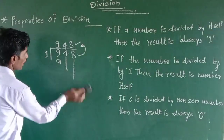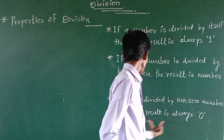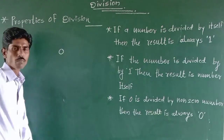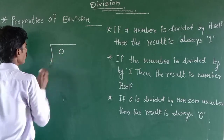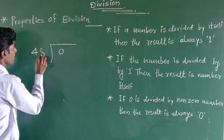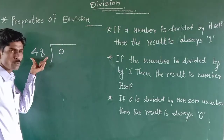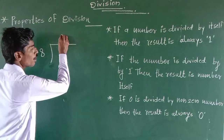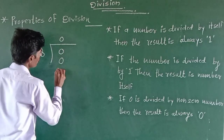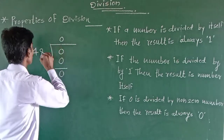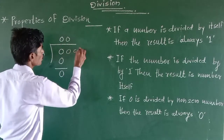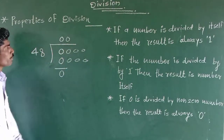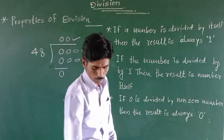The third and last property is: if 0 is divided by a non-zero number, the result will be 0. Suppose 0 divided by a non-zero number, say 48. Since 0 is divided by the non-zero number 48, the result will be 0 — because 4 into 0 is 0, and 8 into 0 is also 0. So if 0 is divided by any non-zero number, the result will be 0. This is the third property of division.